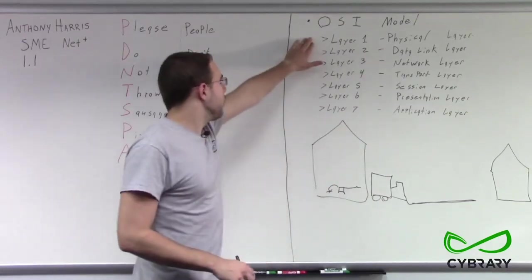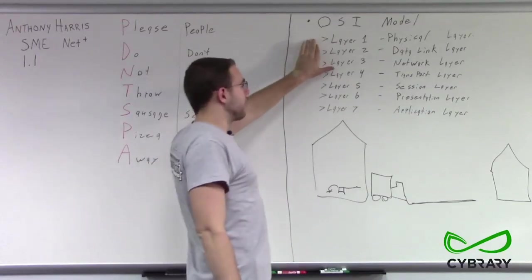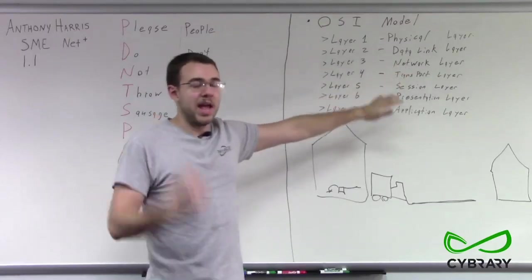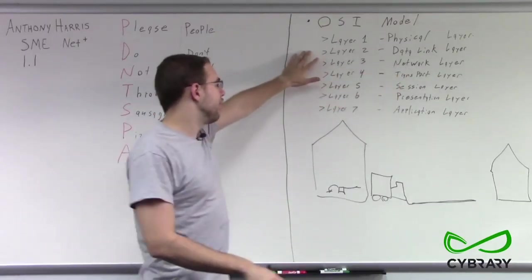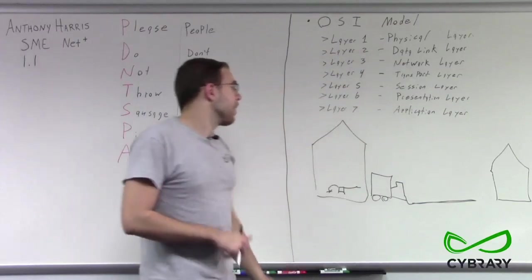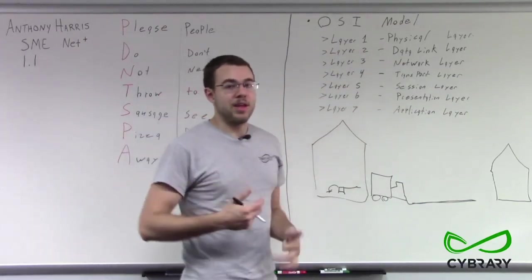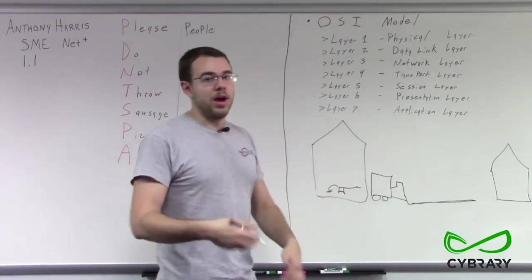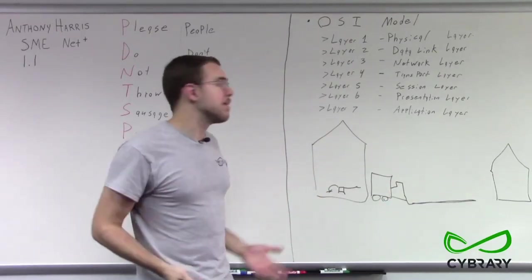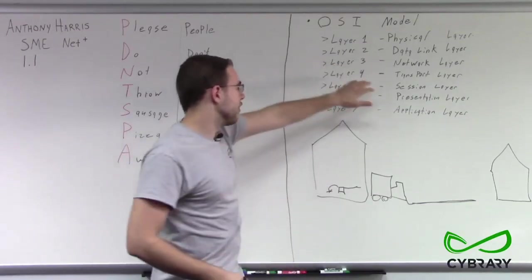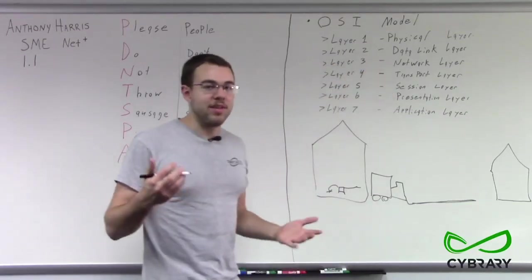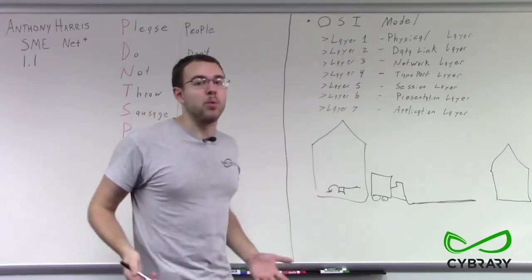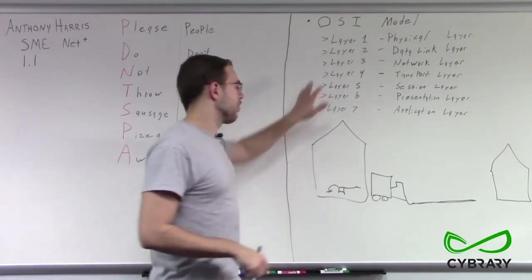So we have seven layers. Layer one is our physical layer — cables and bits. Layer two is our data link layer, which involves sending our MAC address across a network, sending to a switch, or sending frames. Layer three is our network layer — when we use IP addressing, sending to points all across the world, or sending data to a router.